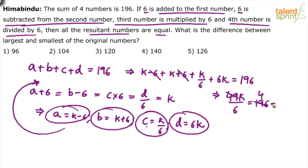49K upon 6 is 196. 49 goes how many times here? 4 times. So what will be the value of K? K is equal to 6 times 4, 24. That's it.